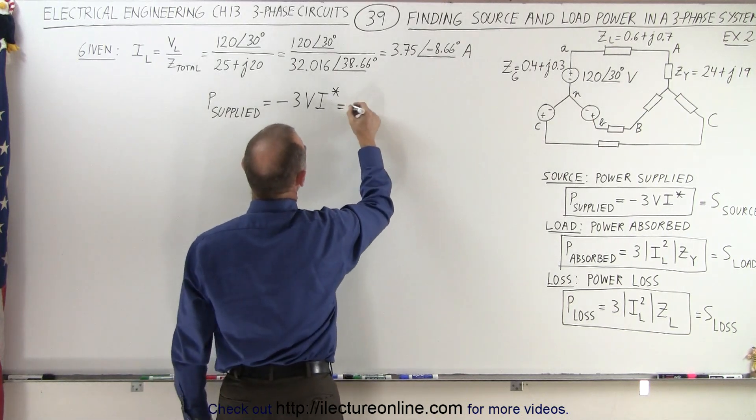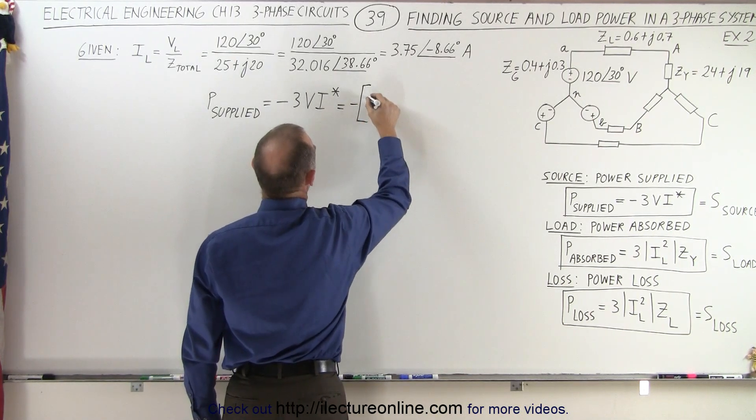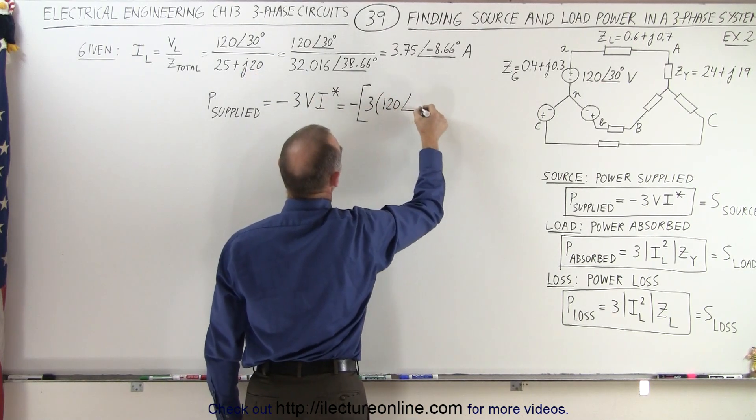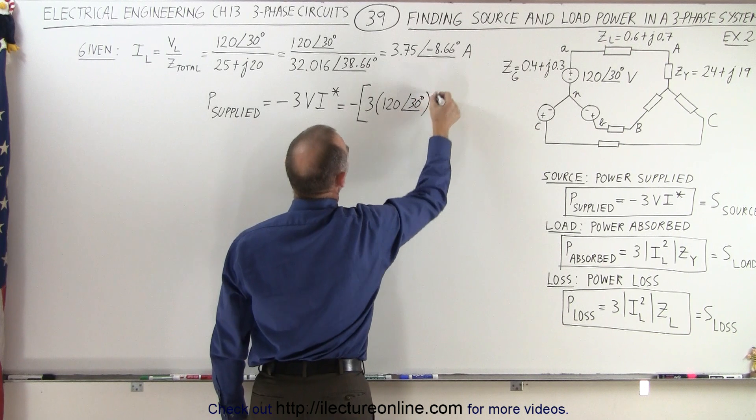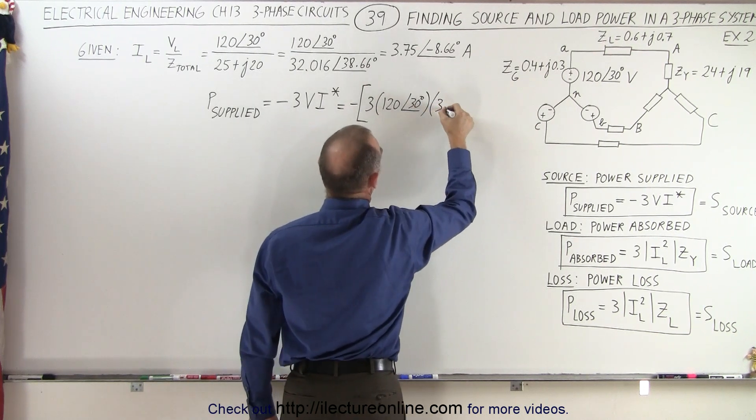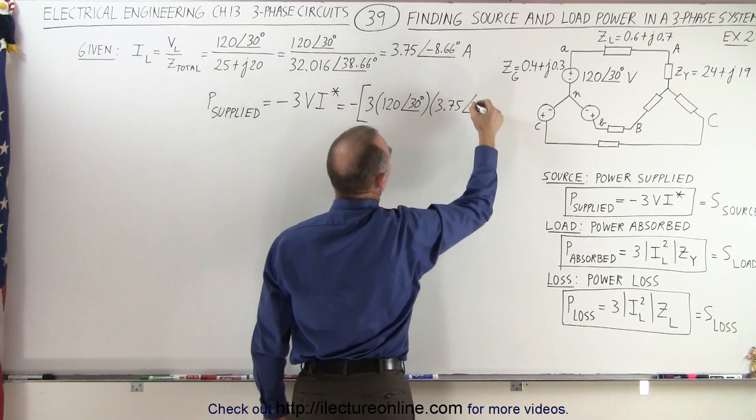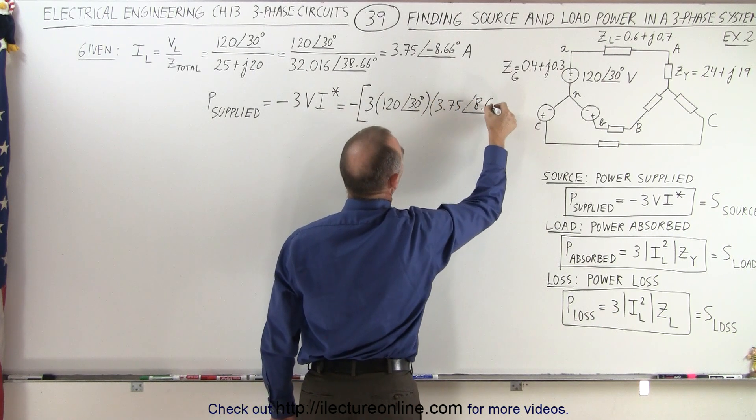So this is going to be equal to negative three times the voltage. The voltage is going to be 120 volts with a phase angle of 30 degrees. Multiply that times the current. And since the complex conjugate, we have to change the angle to a positive 8.66.